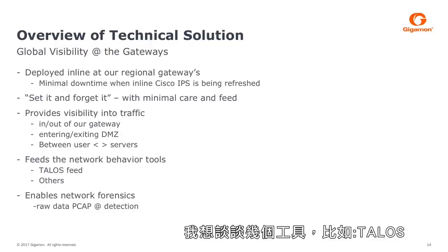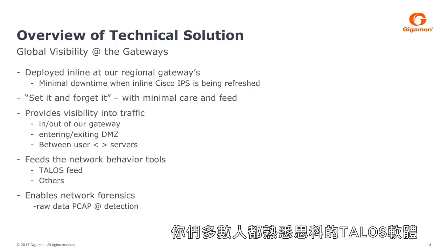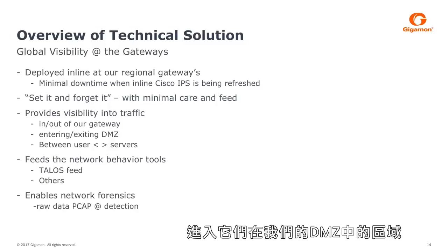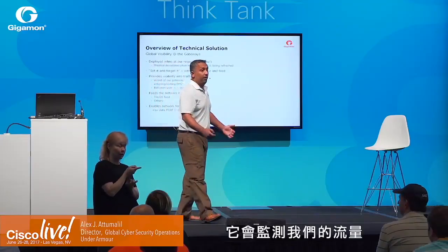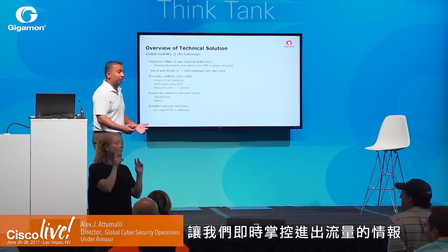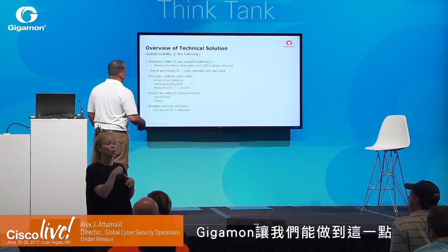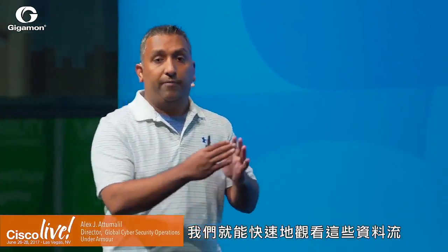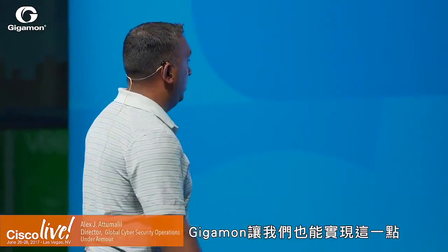A couple of notable tools: Talos. Most are familiar with the Cisco Talos program. Under Armour has a feed going to a Talos box on their DMZ that looks at their traffic, giving them actionable intelligence into traffic moving in and out — all enabled by Gigamon. At the same time, Gigamon allows them to grab PCAPs of interesting traffic. When their behavior analytics tools fire on a key signature, they can quickly PCAP that traffic to see what is happening on either side of that event.